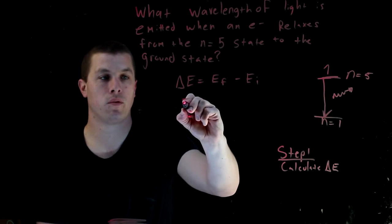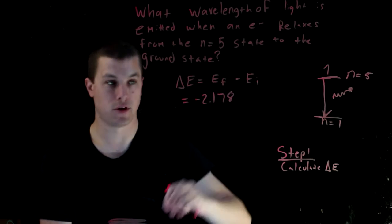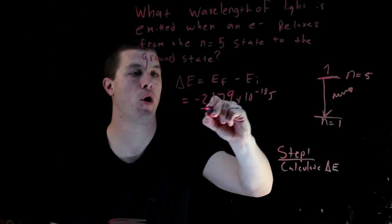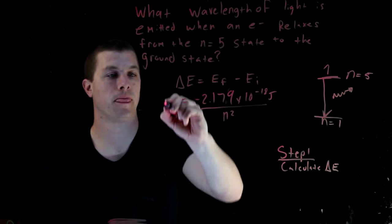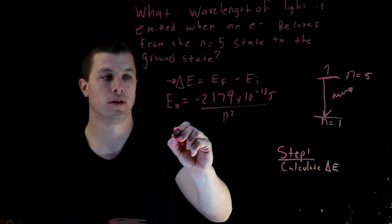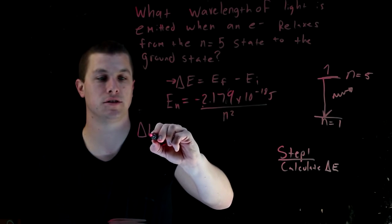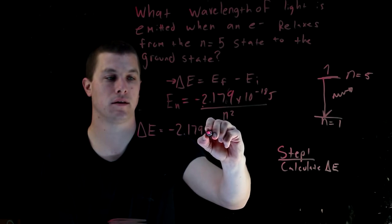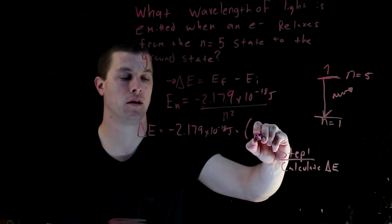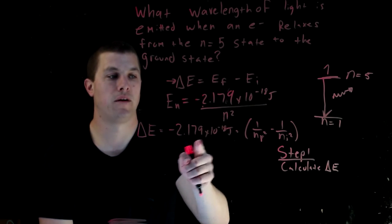Delta E equals the energy final minus the energy initial. We can write energy in terms of negative 2.179 times 10 to the minus 18 joules over n squared. For a change in energy, we pull that term out in front and write: delta E equals negative 2.179 times 10 to the minus 18 joules, times the quantity 1 over n_final squared minus 1 over n_initial squared.